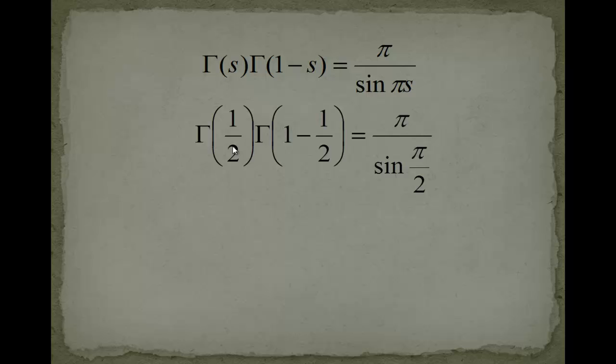Now let's see what will happen. Here this 1 minus 1 half will give you 1 half again. And gamma of 1 half multiplied with gamma of 1 half gives you gamma squared 1 half. On the right hand side, sin of pi half will just give you 1. So on the right hand side we have pi.